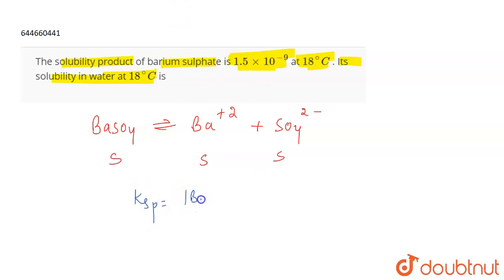So the solubility product will be the concentration of Ba plus 2 ion and the concentration of SO4 2 minus. The solubility of Ba plus 2 is s, and that of SO4 2 minus is also s. And the value of Ksp is given to you as 1.5 into 10 to the power minus 9.